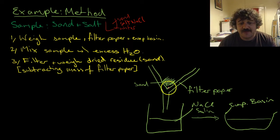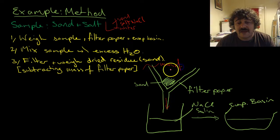We filter it through here. Coming through will be salt and water, and this will just be sand. We dry this in an oven, then weigh it. We weigh it and take away the mass of the filter paper. That will give us the mass of the sand.